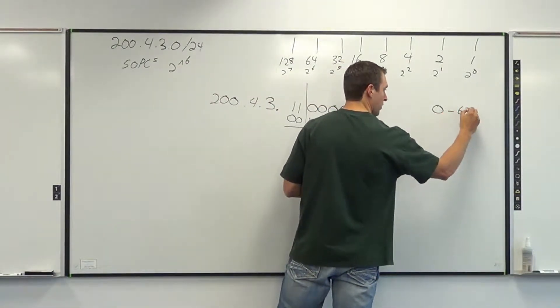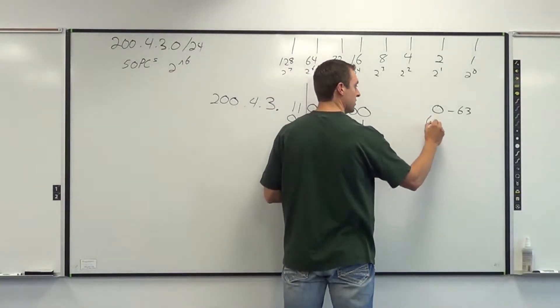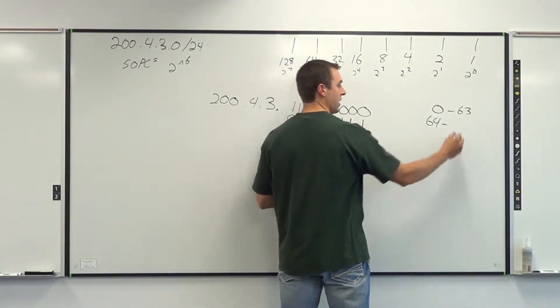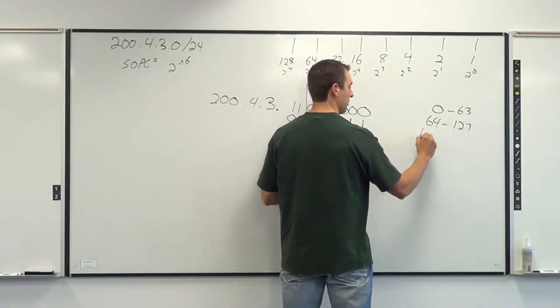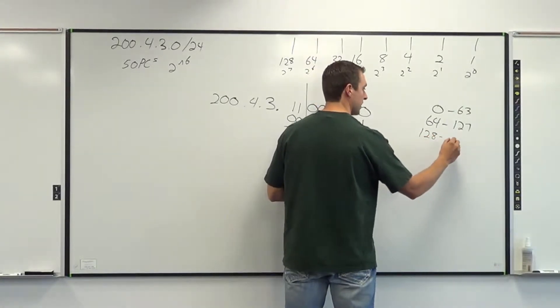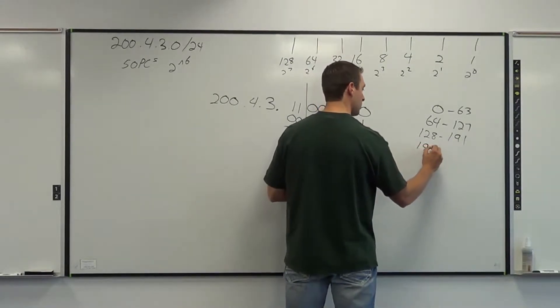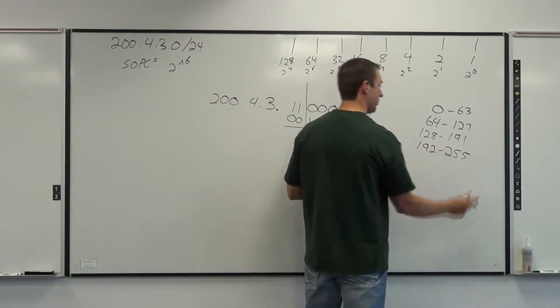And now I essentially have my pattern that I can continue on with. One more than 63 is 64. Add my difference of 63 onto that, 127. One more than 127 is 128. Add 63 onto that, that's 191. One more than 191 is 192. Add 63 onto that, I'm 255.